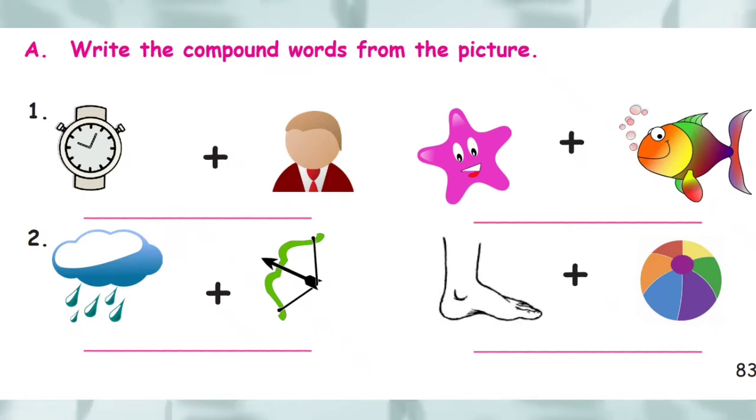What are the pictures given in the second question? Yes. This is rain and this one is bow. Rain plus bow, rainbow. What are the pictures given in the third question? Very good. This is star and this one is fish. Star plus fish, starfish.